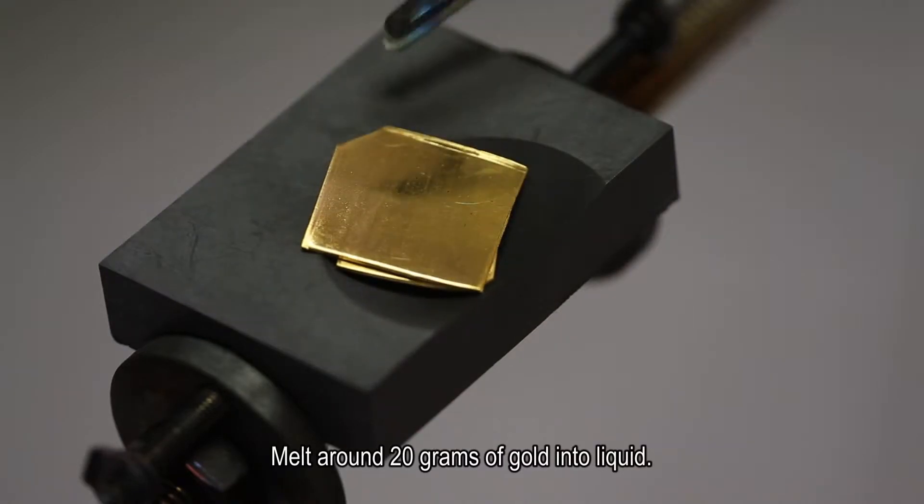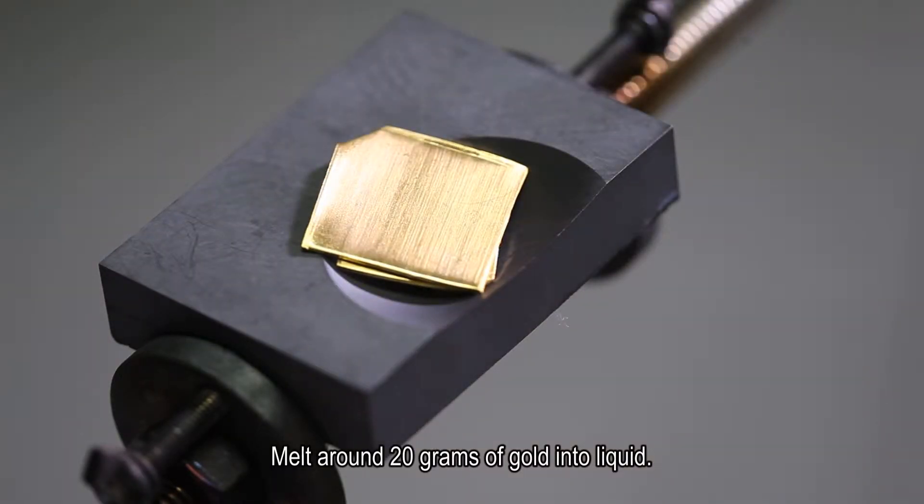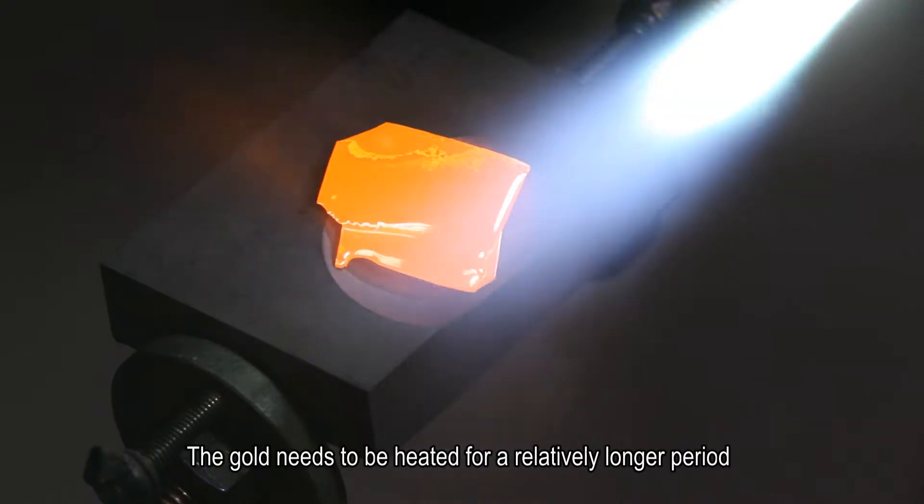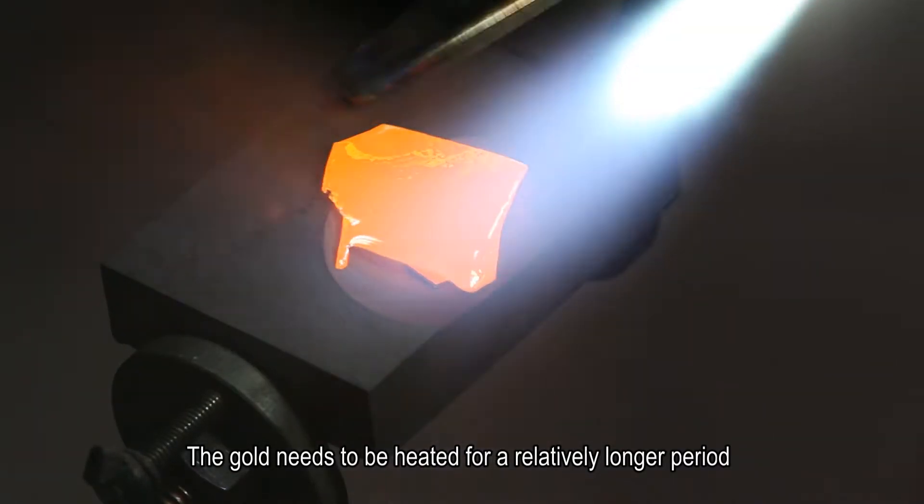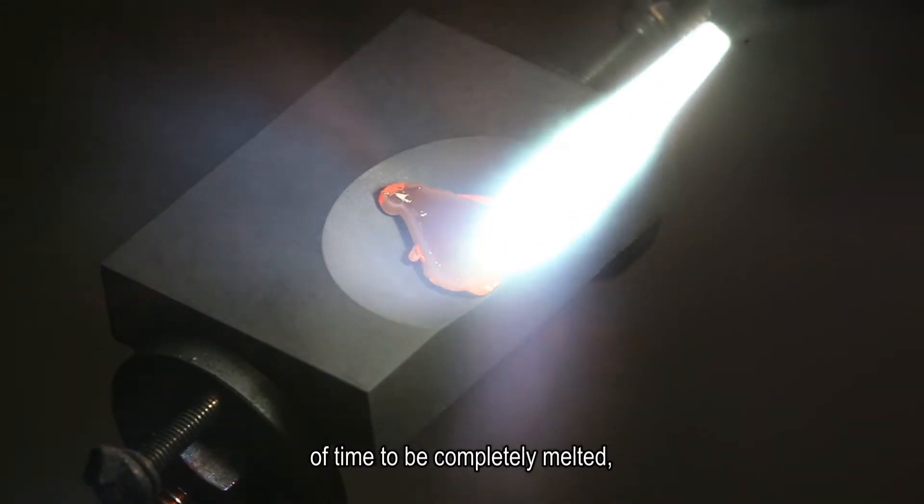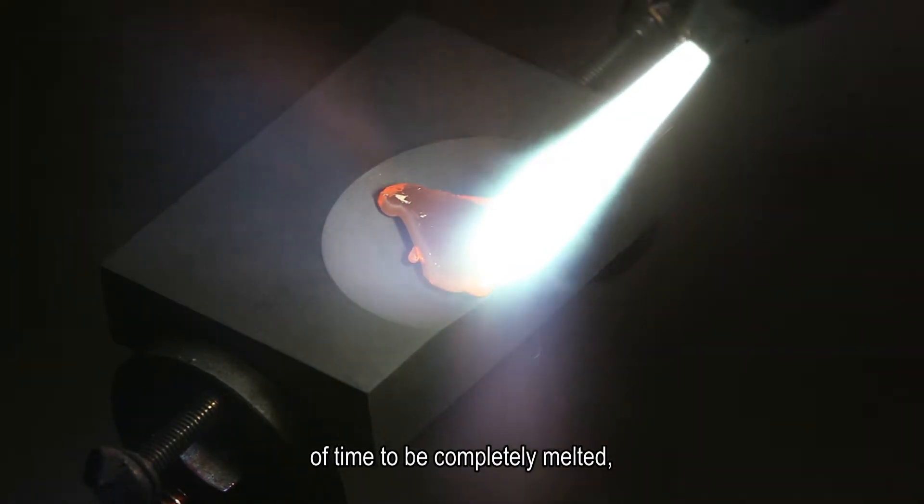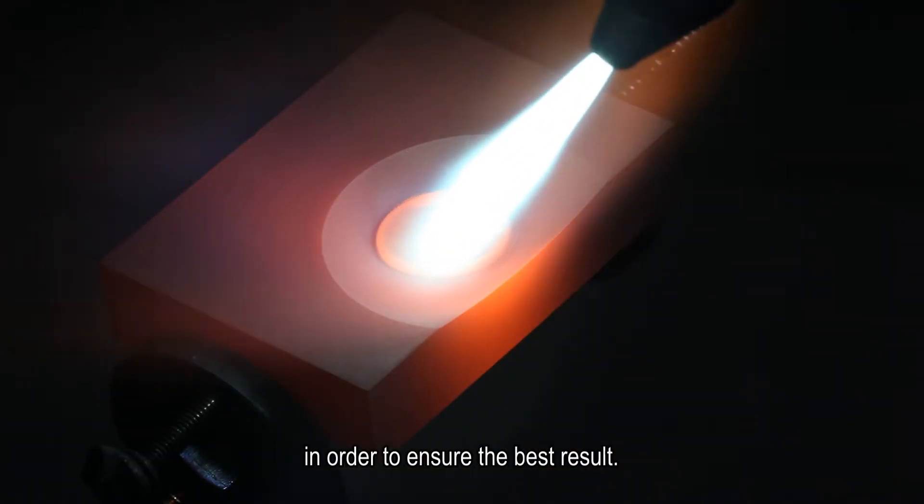Melt around 20 grams of gold into liquid. The gold needs to be heated for a relatively longer period of time to be completely melted, in order to ensure the best result.